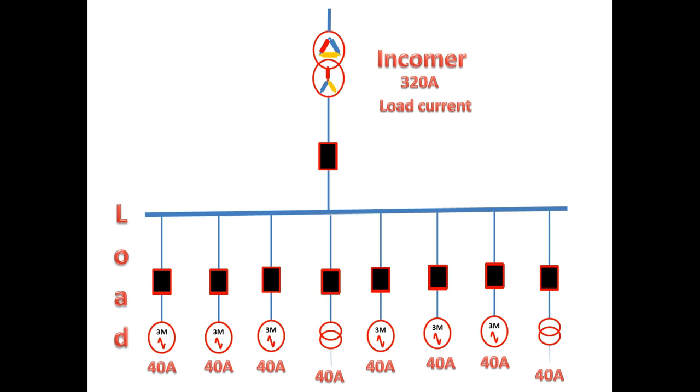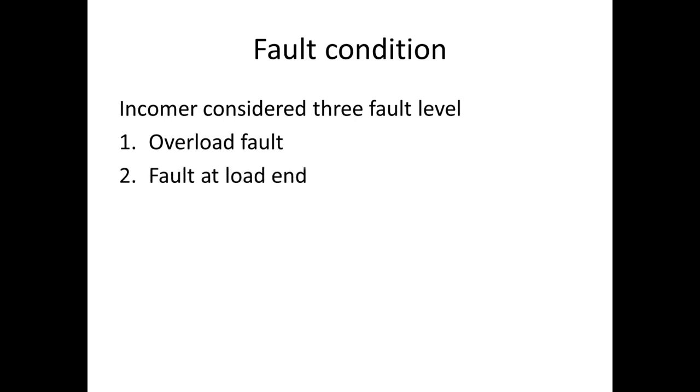The feeder load current is 40A and the full load current for the incomer is 320A. For the incomer alone we can consider three fault levels: first, overload fault; second, fault at load end; third, fault nearer to the incomer.